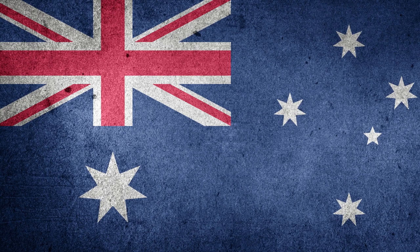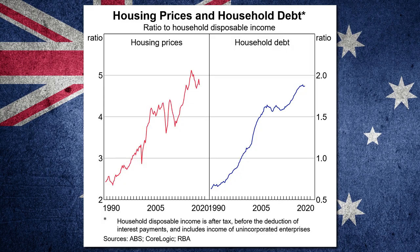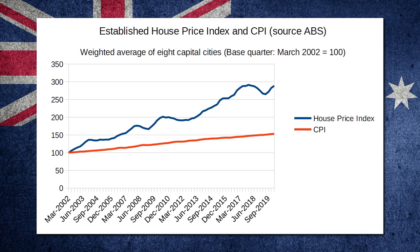We all know that house prices in Australia are broken. This chart from the Reserve Bank of Australia shows that house prices as a ratio to household disposable income is increasing on average. That means it's becoming increasingly more difficult for the average Australian to afford a house as time goes on. Obviously, the more expensive housing becomes relative to income, the more debt people need to get into to afford said housing. It's a disturbing trend — the established house price index has been going up at a greater rate than the CPI.